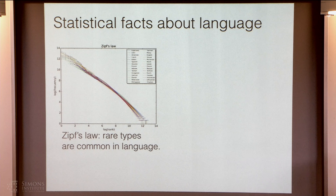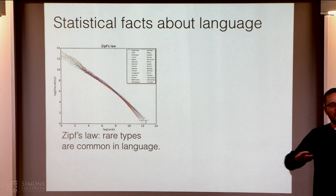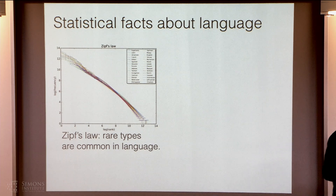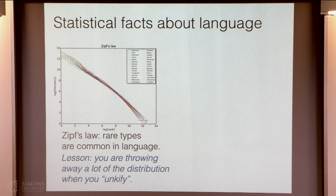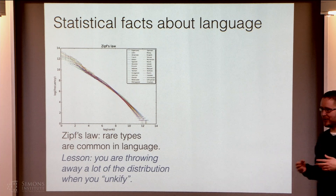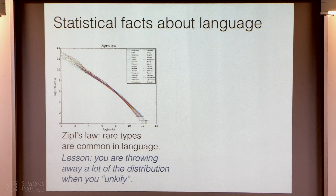This is Zipf's law. This has been known since the 30s at least, that there's basically a power law distribution of frequencies in all natural languages. Another way of saying this is rare types are extremely common, and so when you UNK-ify your corpus and throw away rare words and replace them with this meaningless symbol, you're throwing away a lot of the distribution — and that's probably not a good idea.